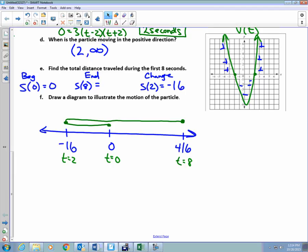But it did not answer the question, which is find the total distance. I think that this is the easiest way to continue to think about it. How many units did I travel between here and here? 16. How many units did I travel then from here back to 0? Another 16. And then from 0 to here? 416. So this is how I always write it out. Traveled 16 back, 16 forward, and then 416 after that. So that would be a total of 448 feet.